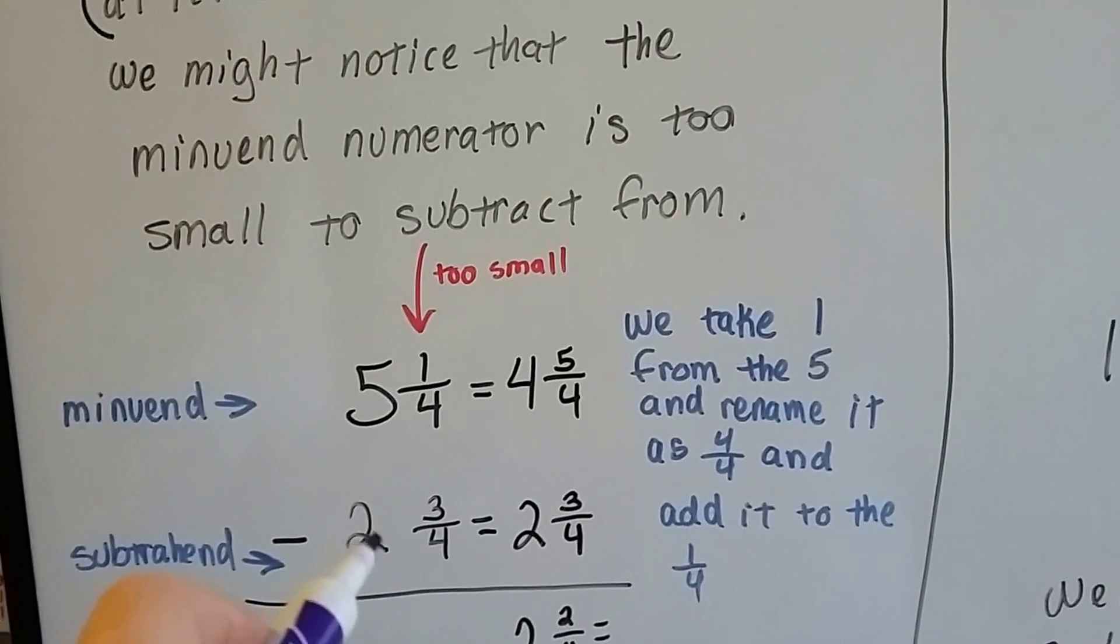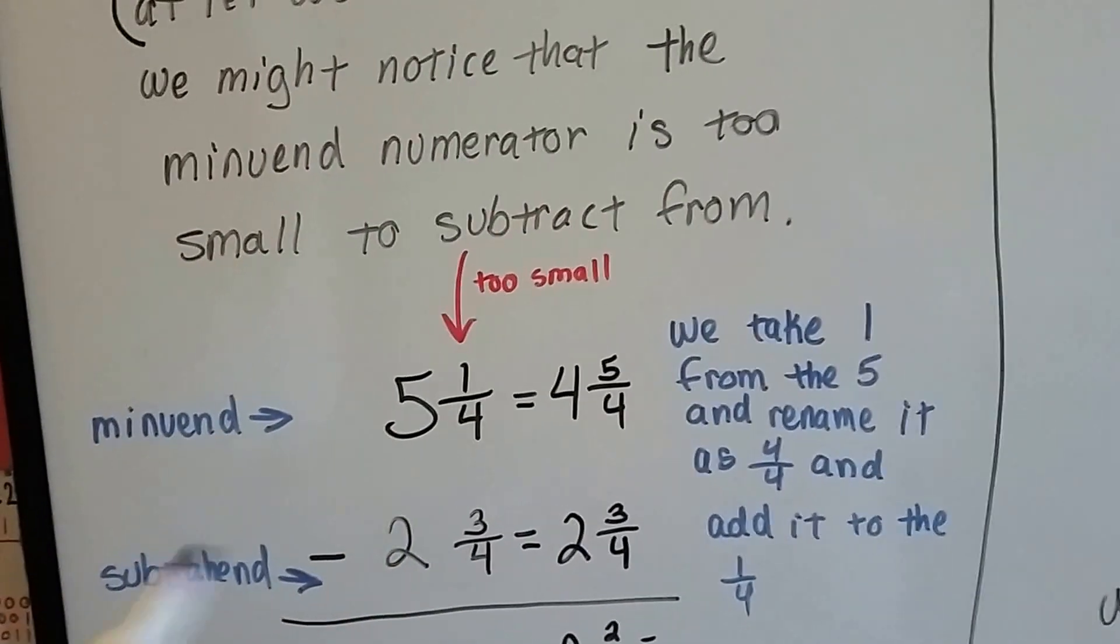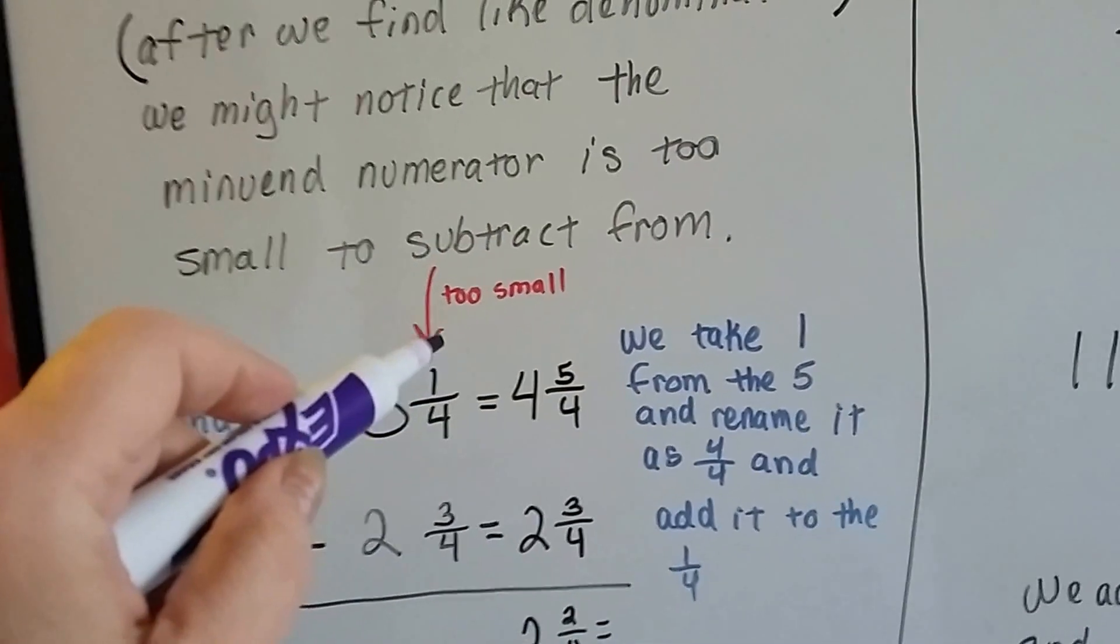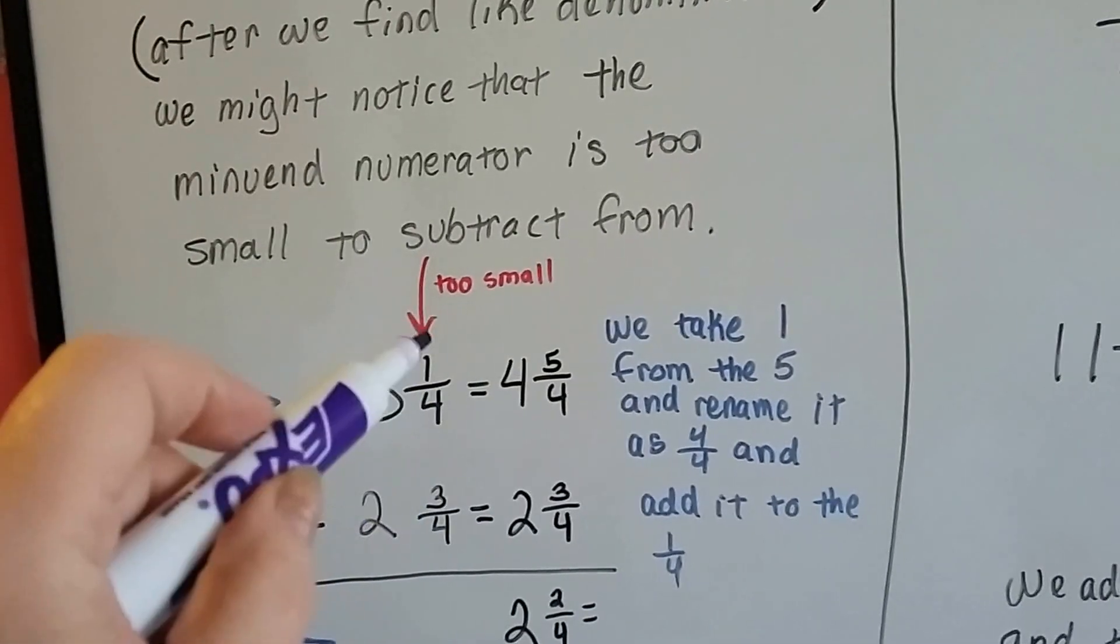The subtrahend is the number that's being taken from it. Well, if this numerator is too small, we can't subtract the 3 from the 1.